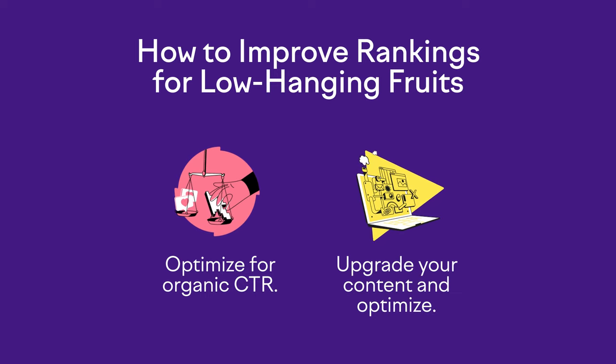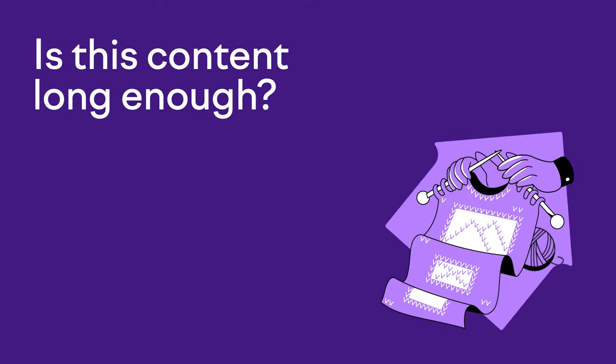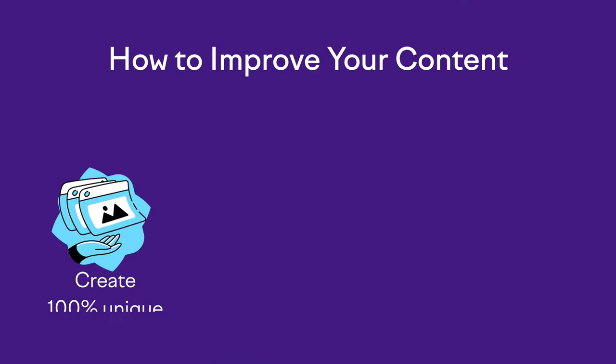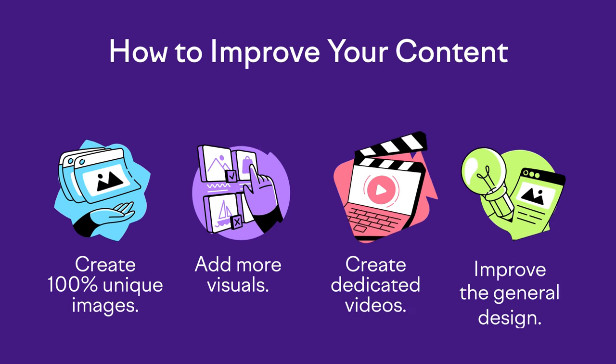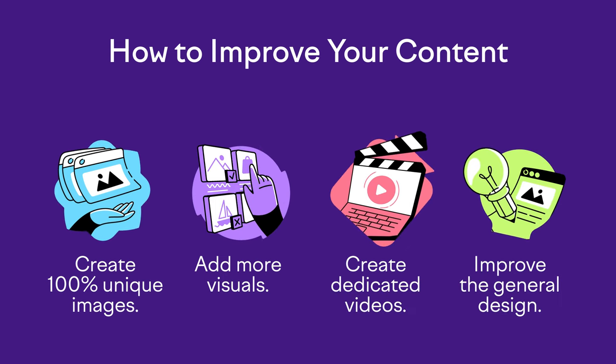The second way to improve rankings for low-hanging fruits is, number two, upgrade your content and optimize. The simplest question to ask is: is this content long enough? Sometimes just adding more content to a page will be enough. SEMrush will give you a target word count based on the competitors, but word count is just one piece to upgrading your content. You can also dramatically improve the perceived quality and value of your content by creating 100% unique images, adding more visuals, creating a dedicated video around the topic, embedding it, and even improving the general design of the page.